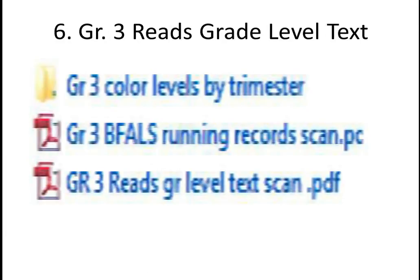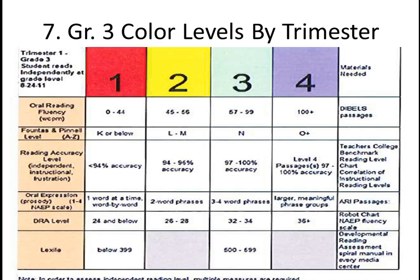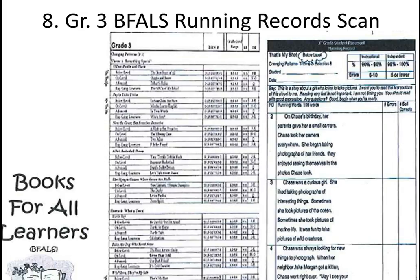The next set of folders exactly matches the categories on the report card. The first section addresses whether a student reads grade level text independently, divided into three parts. The first section contains rubrics for trimester 1, 2, and 3. The rubric indicates where a student should be if they're reading at grade level, including multiple data points to guide our understanding. No one assessment can fully capture this, which is why it's helpful to look at multiple indicators. The B-Falls, or Books for All Learners document, includes a list of the reading difficulty level for all the Trophies books. Teachers have found this very helpful in matching text to readers. Running records are available for every marking period using a B-Falls text that is below, on level, and above level, to help you see where a student is reading at the end of each trimester.